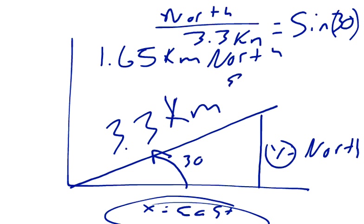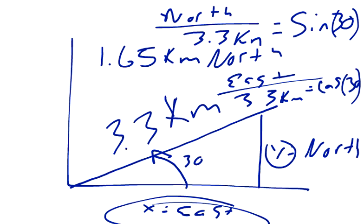So, east over 3.3 kilometers equals cosine of 30 degrees, which you'll find is approximately 2.86.